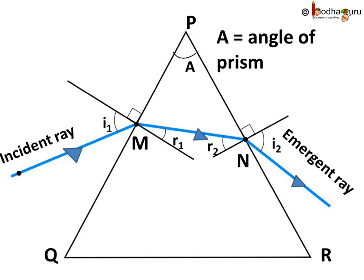You know, angle between PQ and PR, say angle A, is known as angle of prism or refracting angle of prism. Remember, the angle between the two lateral faces of a prism is called the angle of the prism.